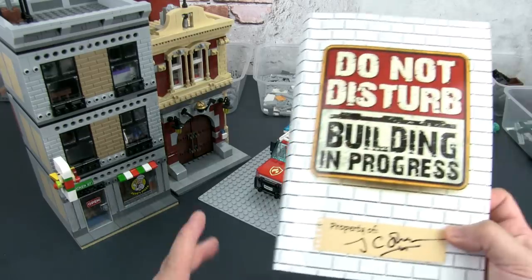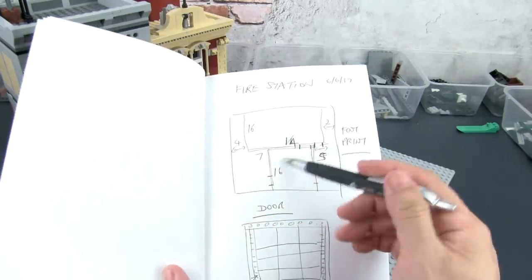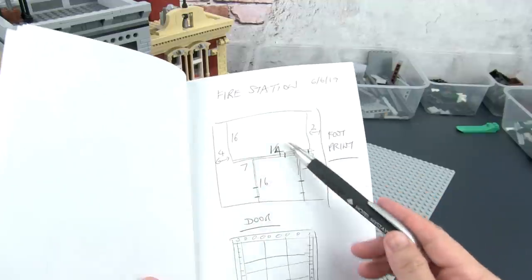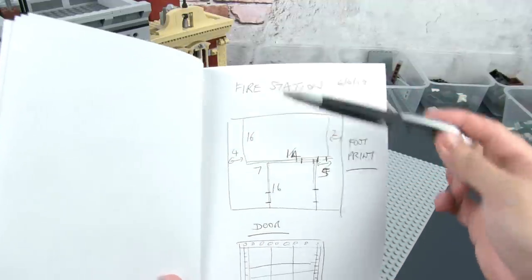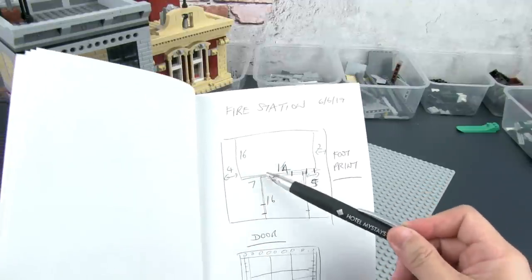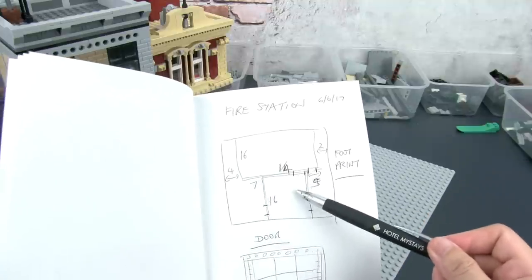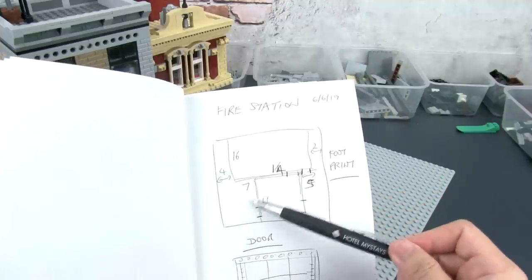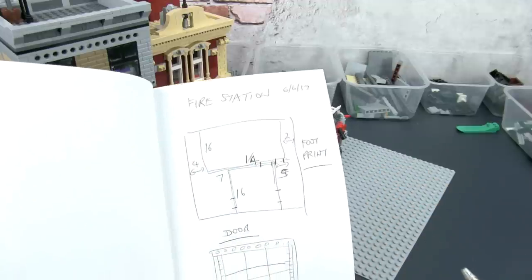I sketched out the footprint of the fire station here. It is going to be odd shape. It will be designed as a modular building in the sense that it can be set between two buildings and there'll be space for the fire truck in the garage and the firehouse will be an adjoining separate building. And there'll be plenty of space for the sidewalk and the back so they can line up with other modular buildings.